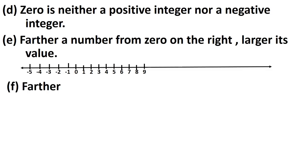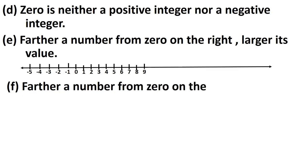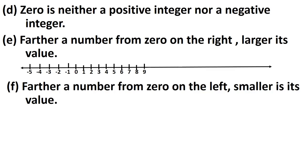The next rule is: farther a number from 0 on the left, smaller its value. If the number is moving towards the left of 0, its value gets smaller and smaller. So minus 5 is smaller than minus 4, minus 4 is smaller than minus 3, minus 3 is smaller than minus 1, and minus 4 is smaller than minus 1.